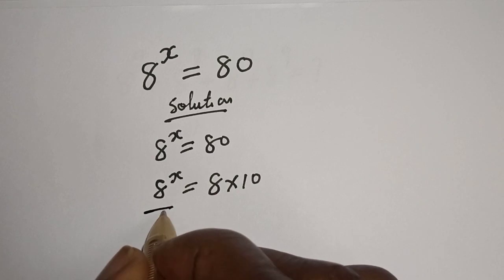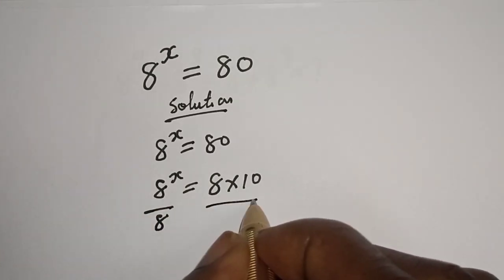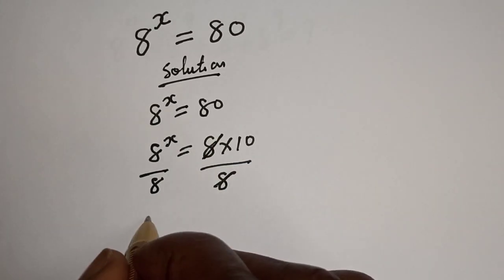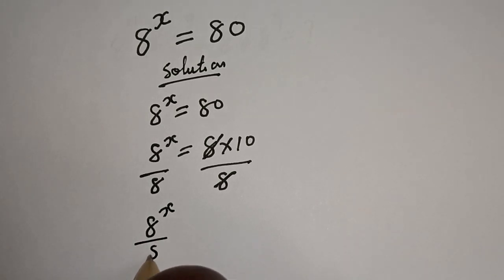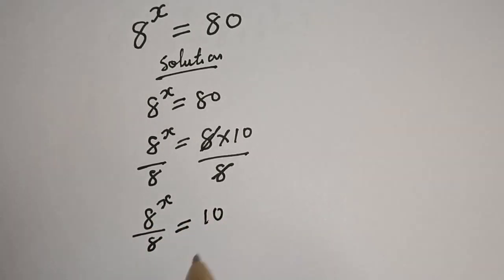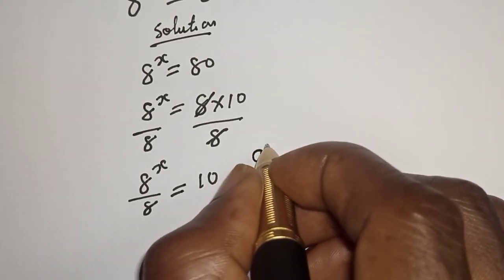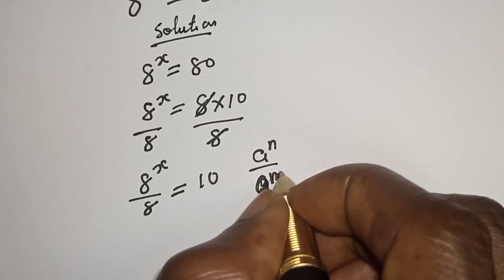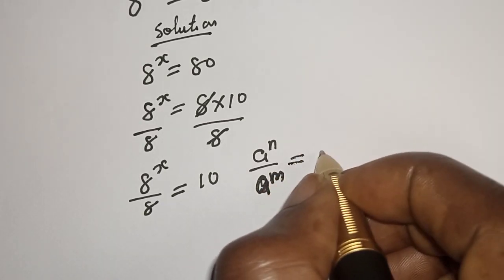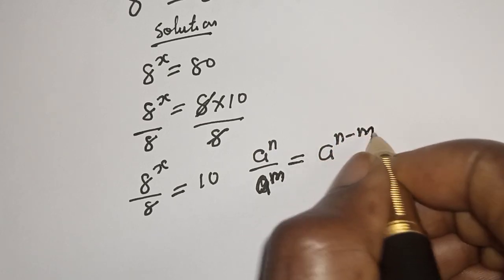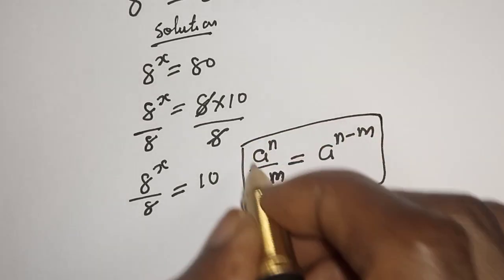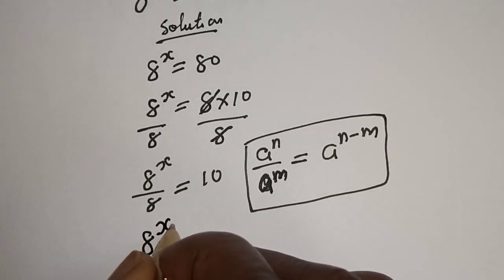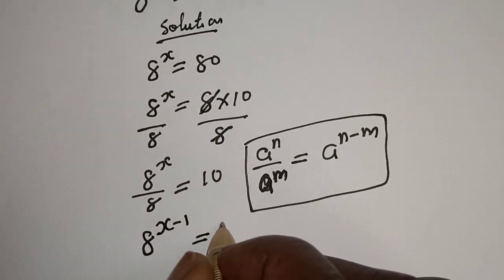Let's divide both sides by 8. This will cancel this, giving 8 raised to power s over 8 is equal to 10. Take note that if you have a raised to power n over a raised to power m, this is equal to a raised to power n minus m. Then this can be written as 8 raised to power s minus 1 is equal to 10.